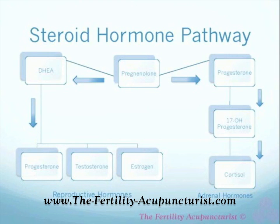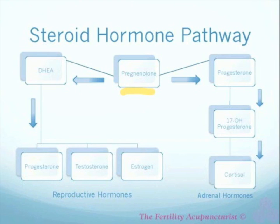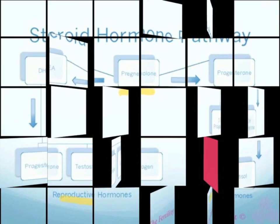Look at our main hormone in the middle: we have pregnenolone, which is considered the mother hormone. In an ideal situation, pregnenolone is evenly divided between the adrenal pathway to the right and the reproductive pathway to the left. When the body is healthy and not too stressed, pregnenolone comes down and is converted into progesterone, 17-hydroxy progesterone, and then into cortisol. Cortisol deals with normal everyday stresses of the body — we need cortisol; it's healthy in its appropriate amount.